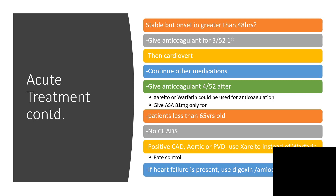Let me quickly go over the CHA2DS2-VASc score. C is for congestive heart failure — if present, score one point. H is hypertension — is that present? A is age older than 75 years. D is diabetes mellitus. S is history of stroke or TIA — if present, score two points. A score of zero out of six means low risk of stroke; one out of six is low to moderate; two to three is moderate; and anything greater than three is high risk for stroke.